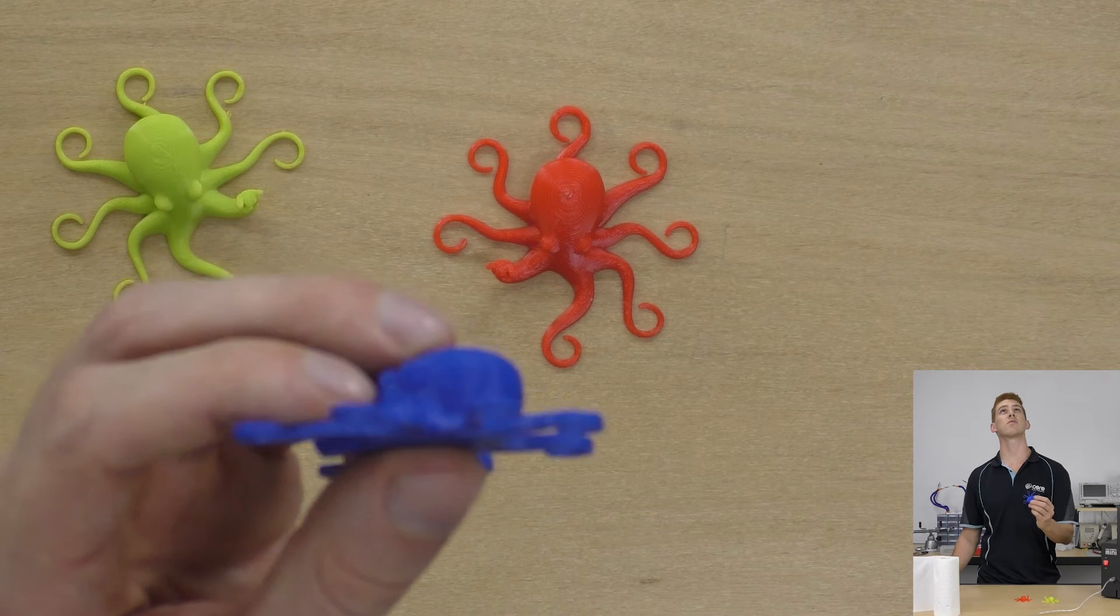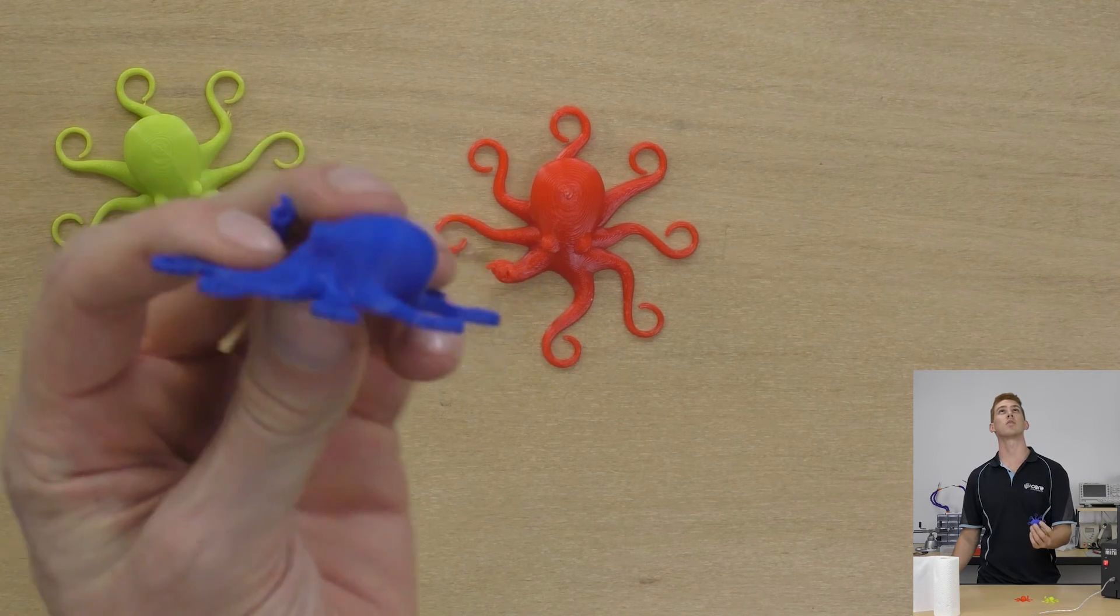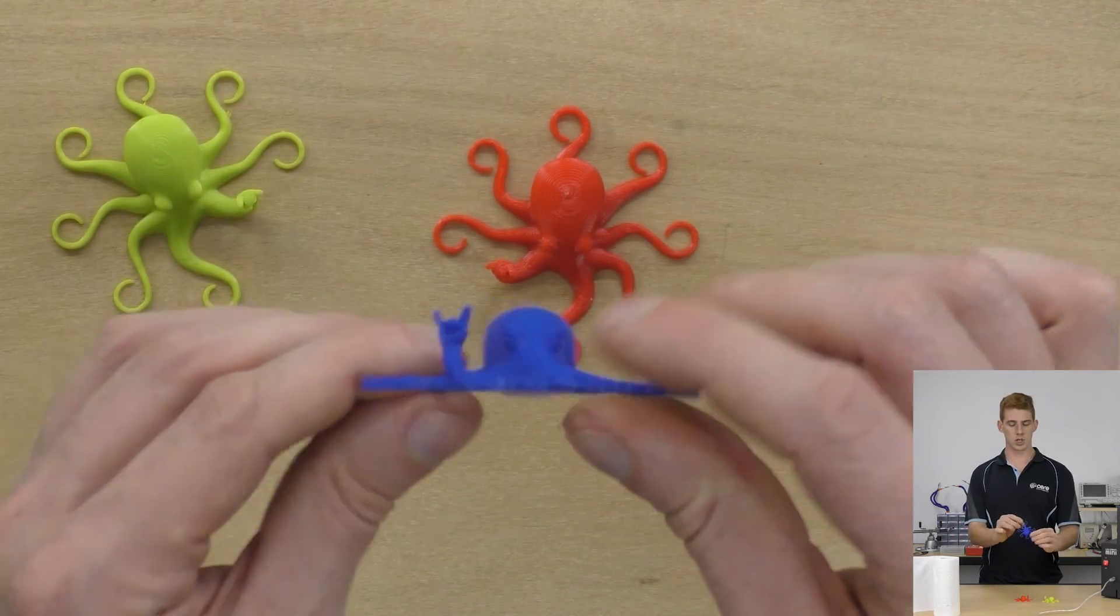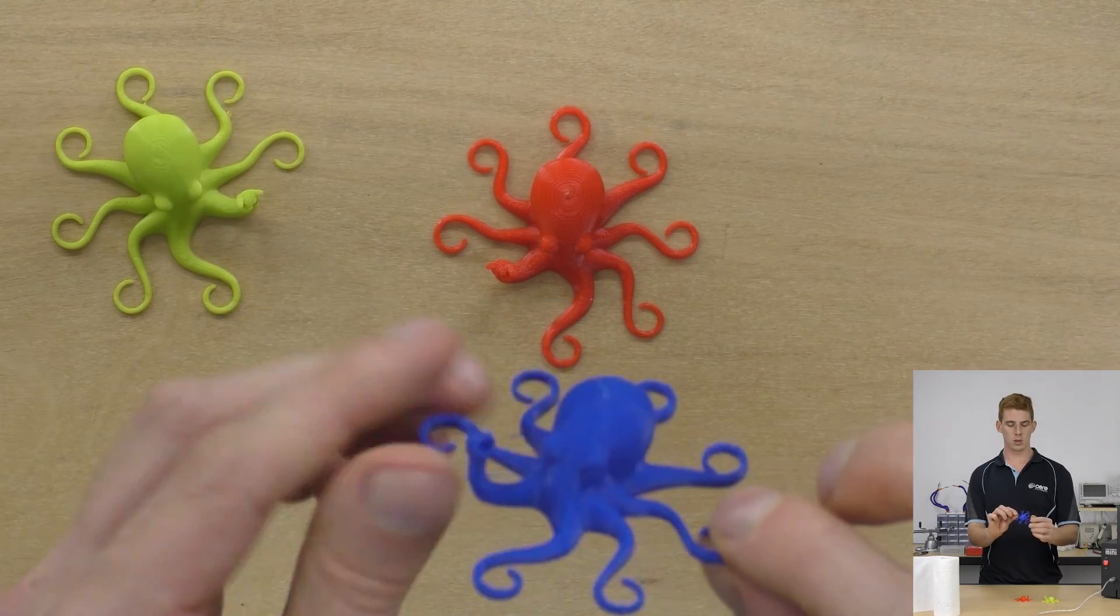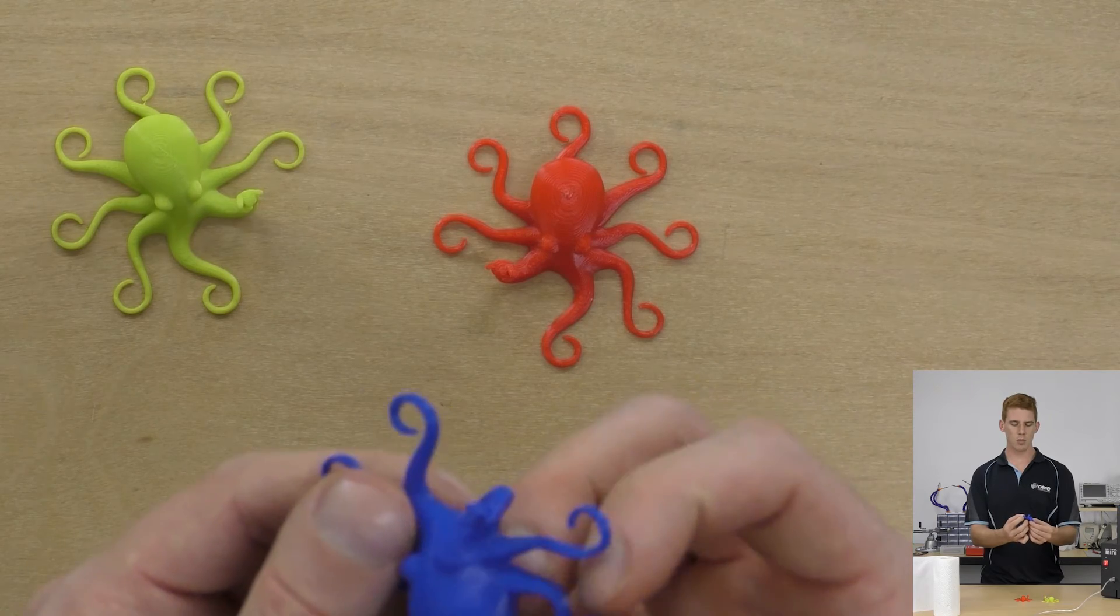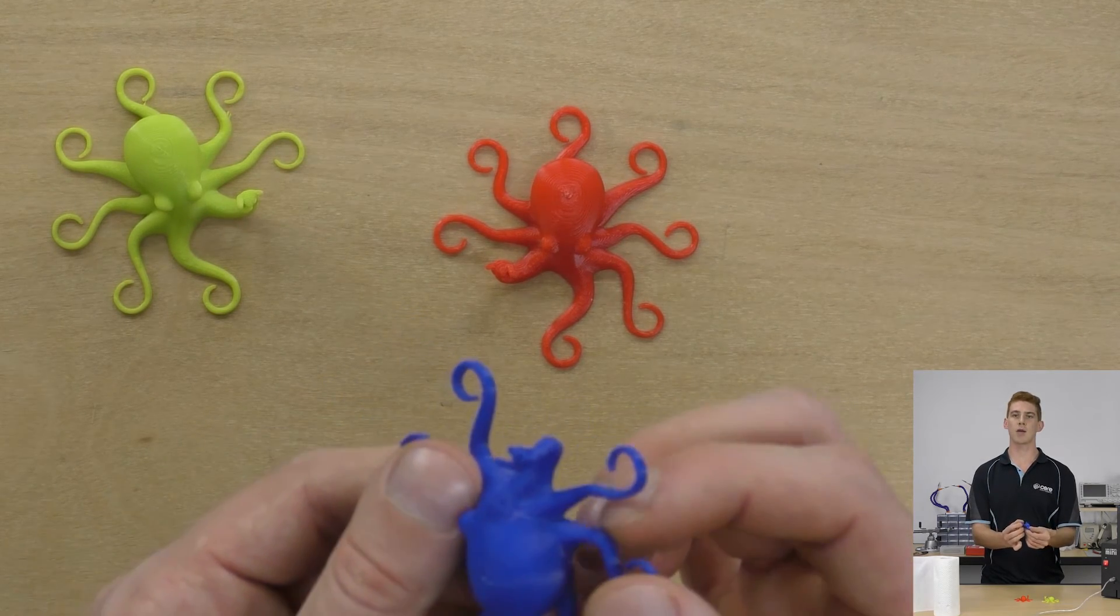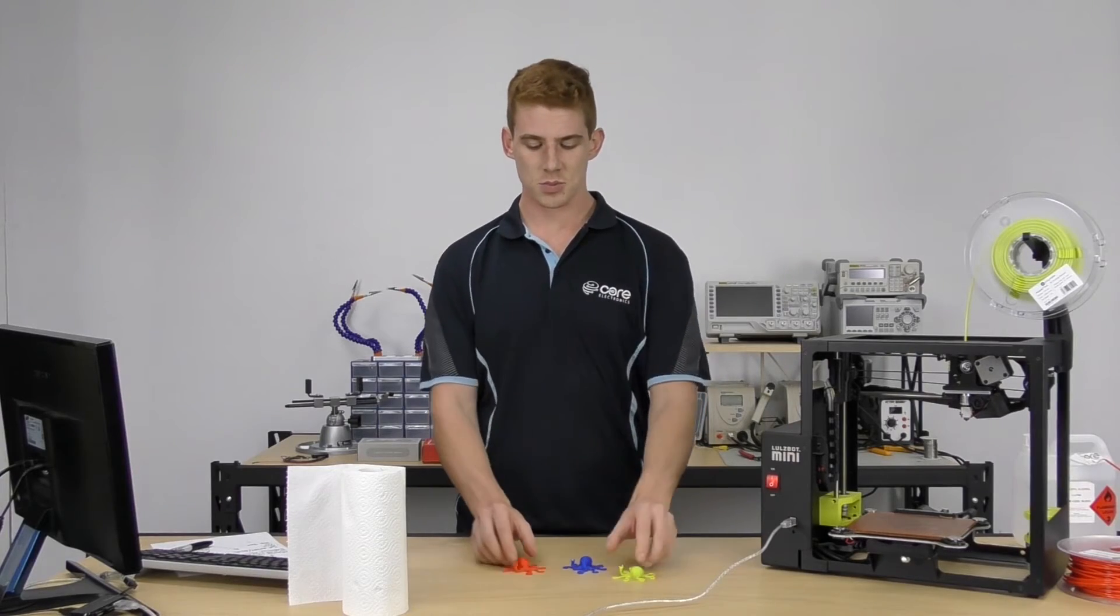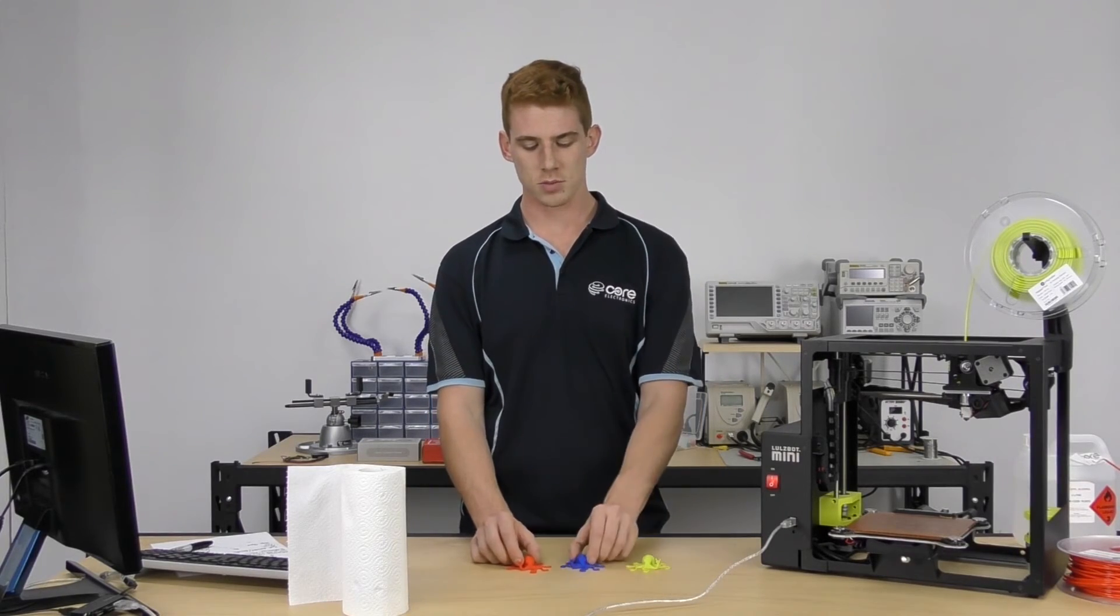This blue one I believe was actually printed at 0.2 layer height, so that's just a fraction of a millimeter smaller than the green one. This is the blue ABS print, another octopus which also printed quite well. There is some stringing happening in our prints, which might require us to just tune up our retraction settings and maybe our print speed, but all in all, that was our first print. They are our three octopuses of different qualities.